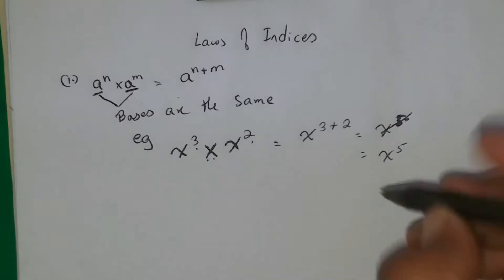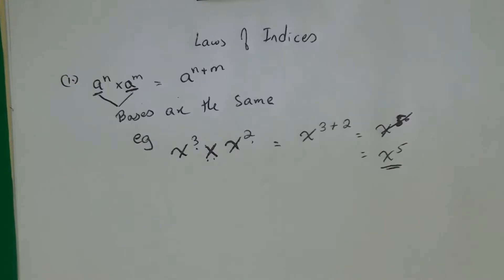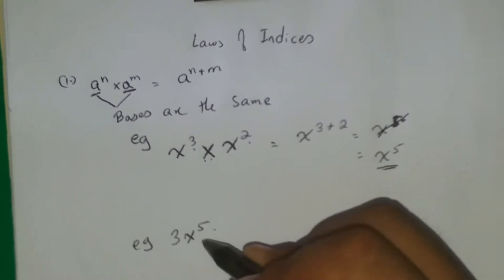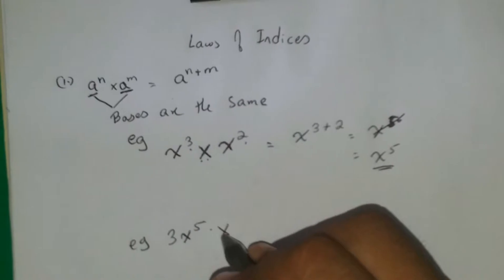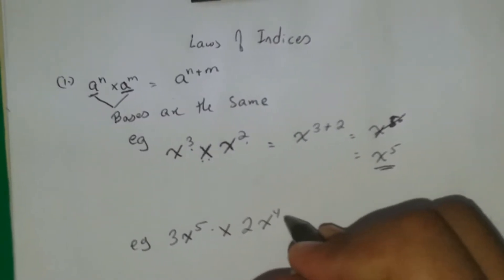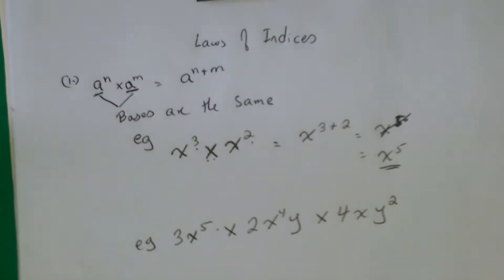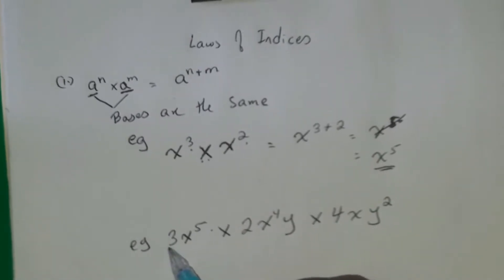That is what the first law is saying — if you have the same bases, you can add the powers. For Example 2, we have 3x to the fifth times 2x to the fourth y times 4x y squared. Notice that some terms have explicit powers and some do not.